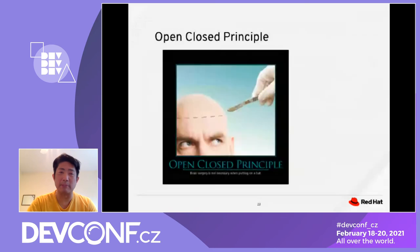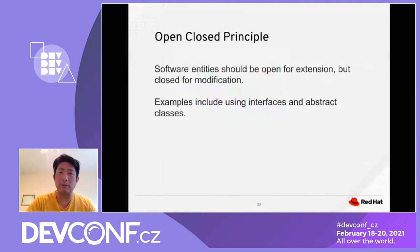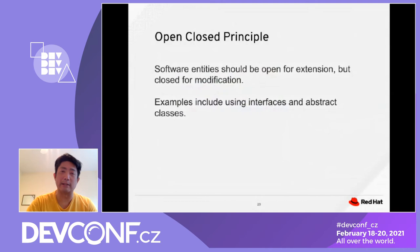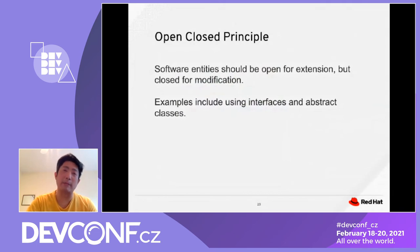Open/Closed Principle: software entities should be open for extension and closed for modification. Think about using interfaces and abstract classes. You should always have a way to extend your object when you need to add additional features, but you don't want to modify the base class.